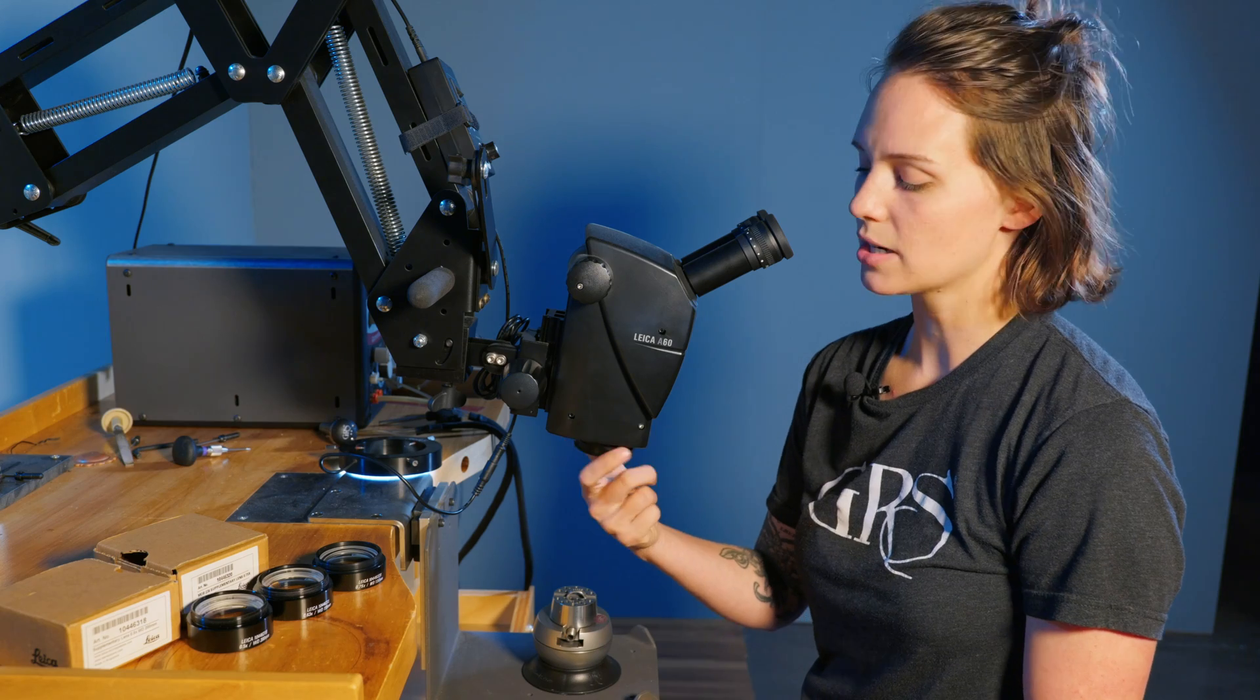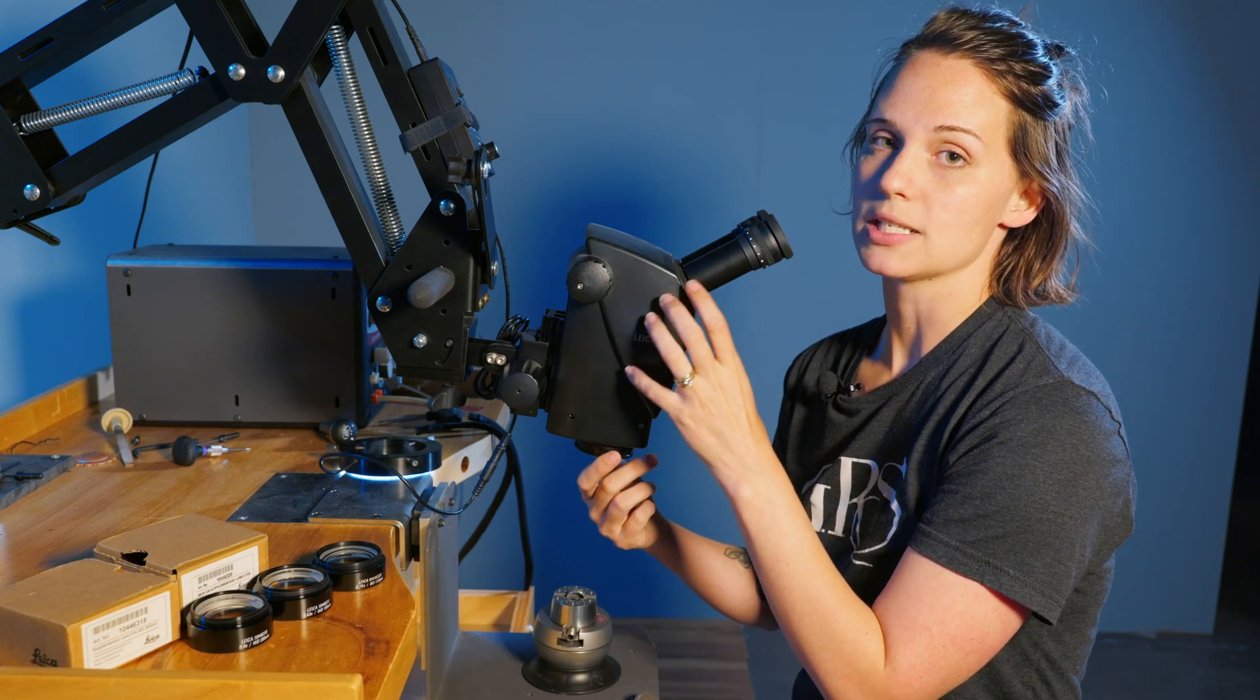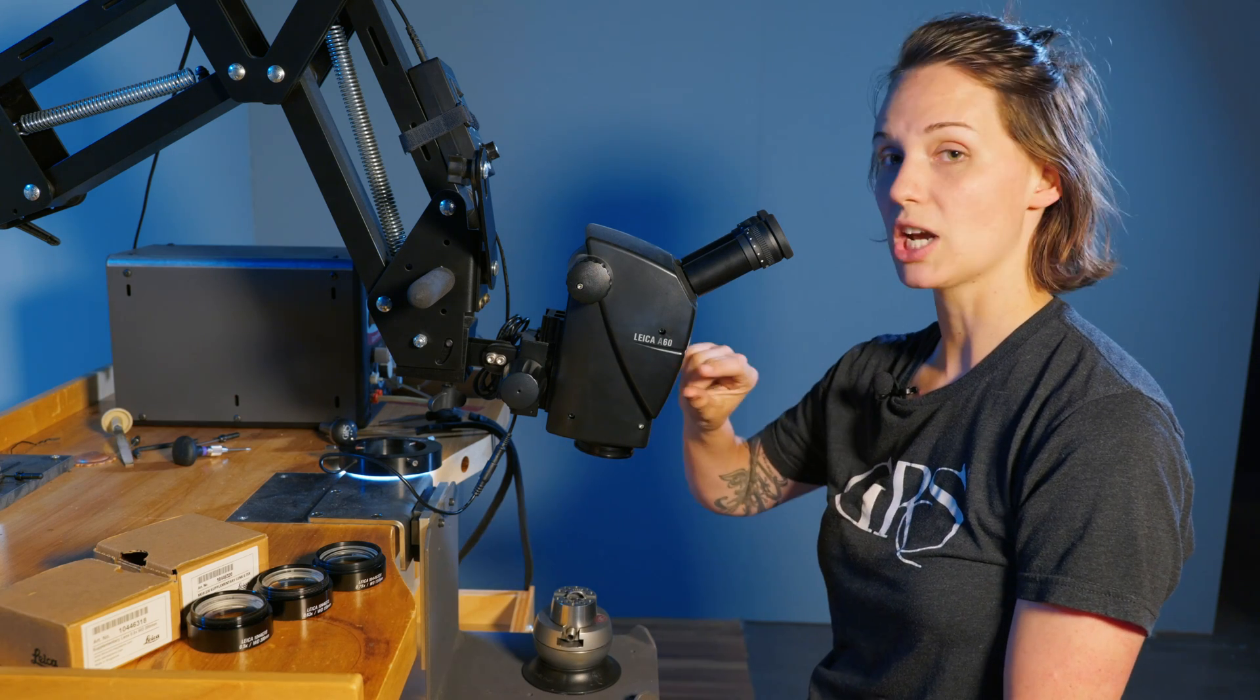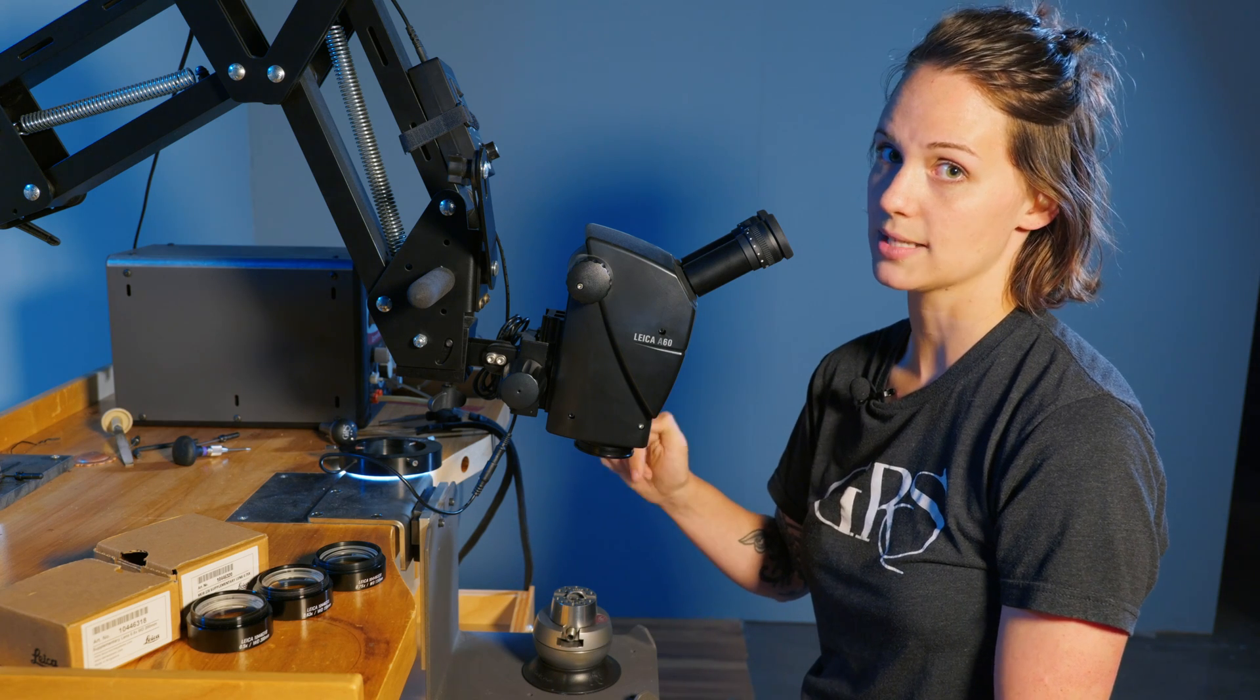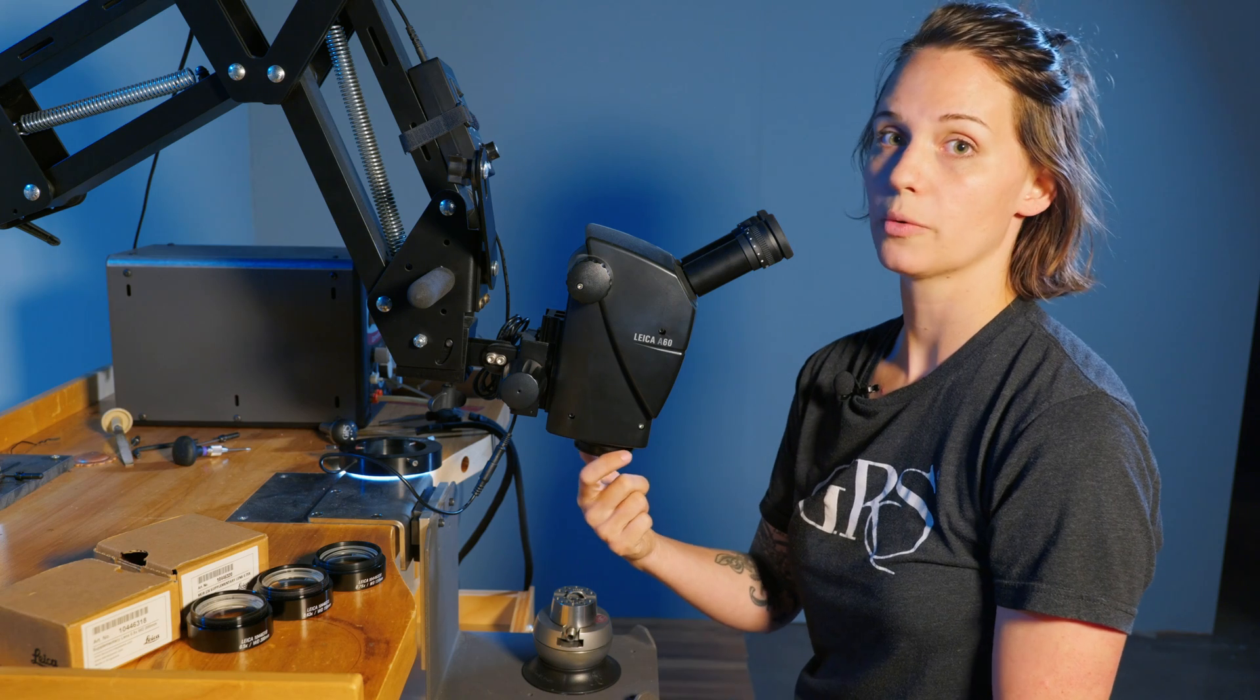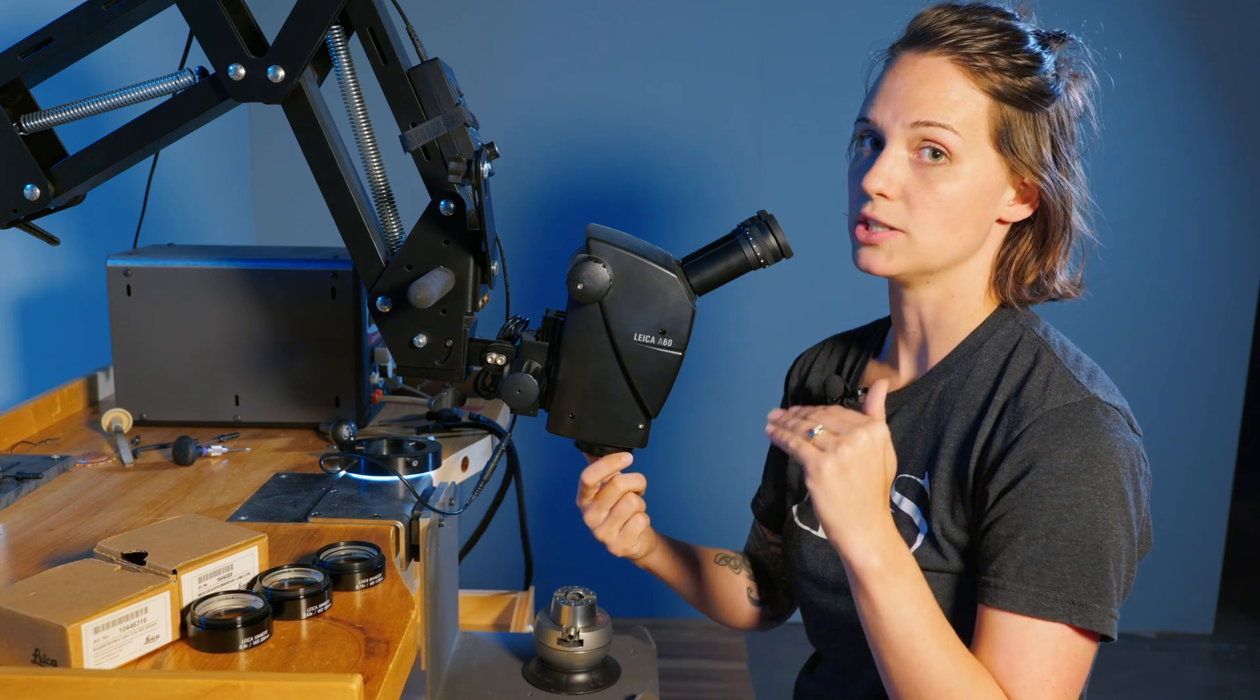The first thing we need to talk about is this adapter ring. These lenses were not designed for the A series microscope, so you need this because otherwise the objective inside of the microscope would actually hit the glass of the lens. This allows you to have a little bit more wiggle room and allows you to use the full range of your magnification.